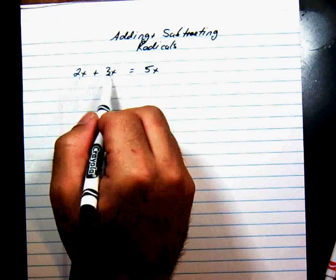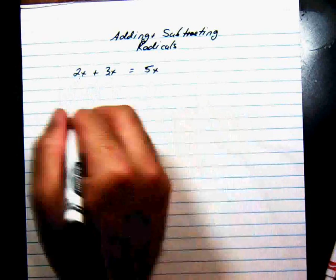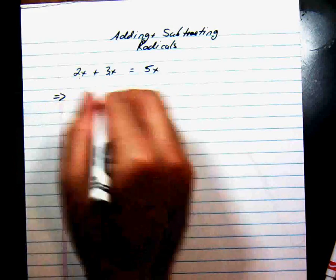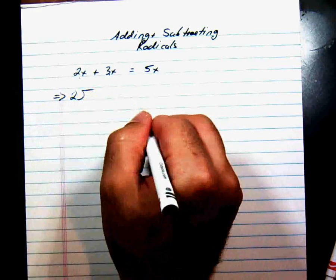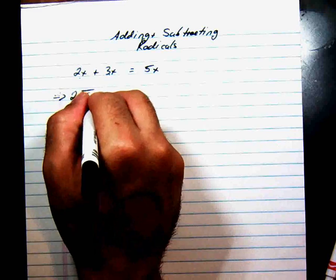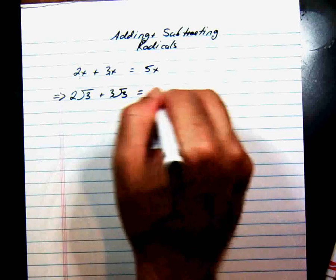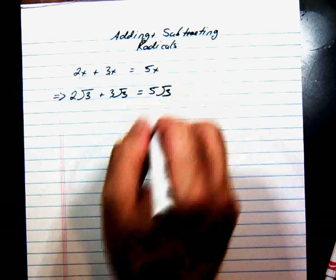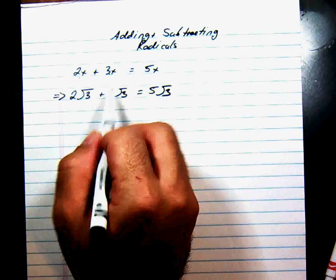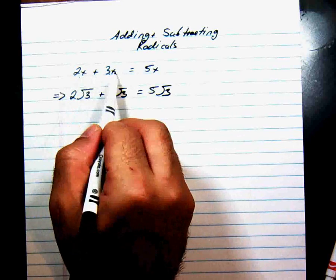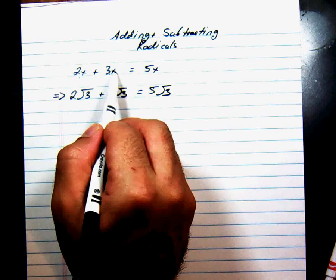Okay, we know that 2x plus 3x is 5x. So now we can just replace the x's with some sort of radical. Let's say 2 radical 3 plus 3 radical 3. That's going to be equal to 5 radical 3. You can add and subtract radicals just like you do with combining like terms with algebraic equations and expressions.